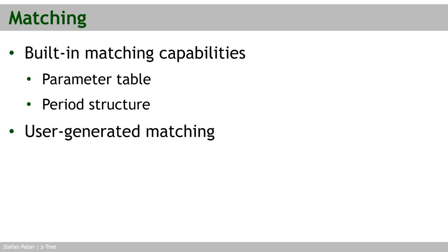Imagine that you have eight people in your lab and you want to assign them to groups of two, such that only the two partners within a group interact with each other in a given period. The question of how you assign these people to these groups and how the group compositions change between periods is what a matching scheme is all about.